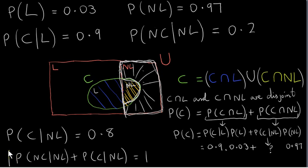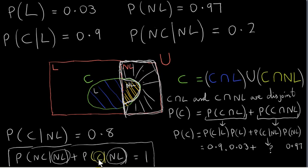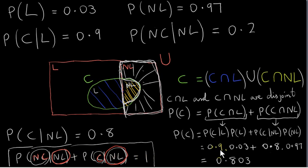Basically, we're conditioning on the fact that a flight is not late, so we're just considering all the flights that are not late. For those flights, either there were complaints or there were no complaints, so these two probabilities must add to one. Calculating all of this, we get 0.803 for the probability of C. In any probability problem, we must get an answer that is less than one. That's the law of total probability.